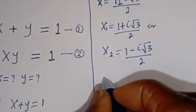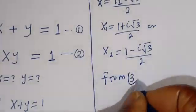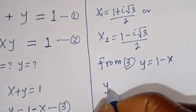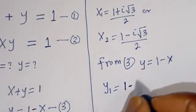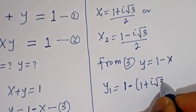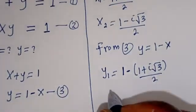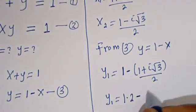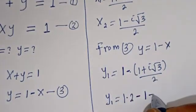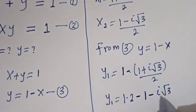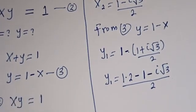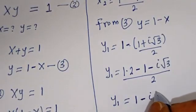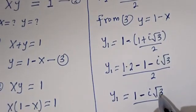Now we can solve for Y1 and Y2. From equation 3, Y is equal to 1 minus X. So Y1 equals 1 minus S1, which is 1 minus (1 plus i√3)/2. Writing 1 as 2/2, we get (2 minus 1 minus i√3) / 2, which gives Y1 equals (1 minus i√3) / 2.